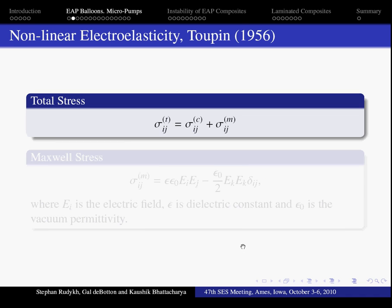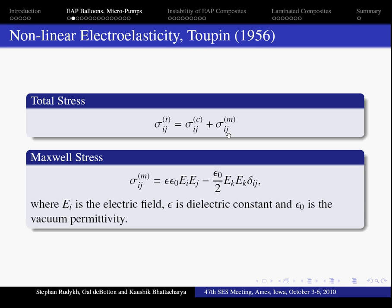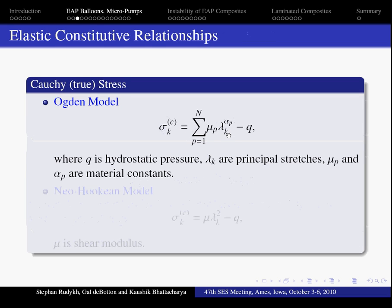In this work we follow the theory of nonlinear electroelasticity, where total stress is the sum of electric elastic and electrostatic. Maxwell's stress depends on electric field and material at the electric constant. To specify a material elastic behavior, we use the rather general Ogden model, which can be reduced to the widely used Neokin model.